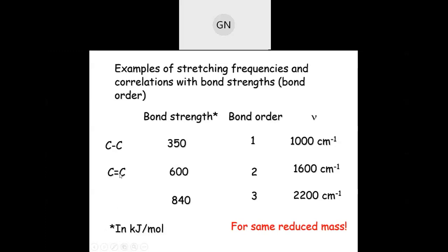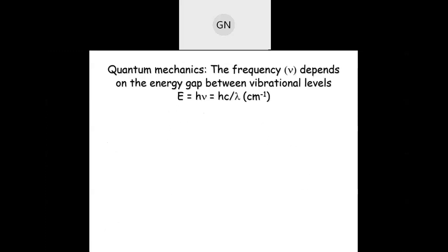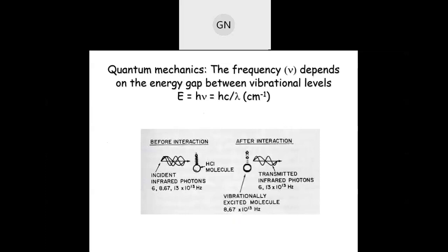This holds for the same reduced mass since both point charges m₁ and m₂ are the same. The classical approach is always followed by the quantum mechanical approach — you cannot complete the discussion without it. The quantum mechanical approach considers incident infrared light in the form of a photon incident on a dipolar molecule, which is vibrationally excited, and some of the light is transmitted.